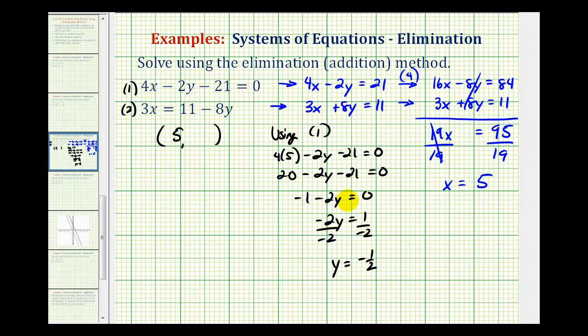So our solution is the ordered pair 5 comma negative 1 half, or x equals 5 and y equals negative 1 half. And because we have one unique solution, this means the system is consistent because it has at least one solution. And the equations are different, so the equations are independent.